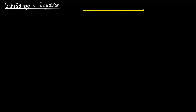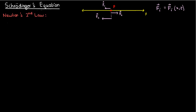Suppose I had a particle P that was constrained to move along the x-axis. Suppose also that I was applying several forces to that particle — let's say f1, f2, all the way to fn — all of which generally depended on the particle's position x and the time elapsed t. If that were the case, then we could find the particle's position x as a function of time using Newton's second law.